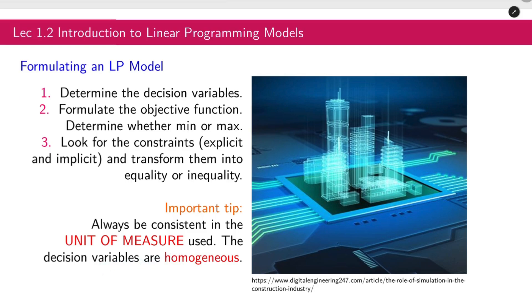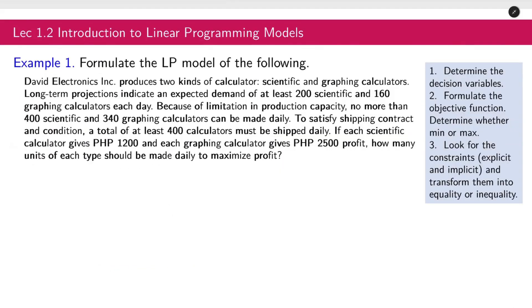Let us now formulate the LP model of the following problem. David Electronics Incorporated produces two kinds of calculator: scientific and graphing calculators. Long-term projections indicate an expected demand of at least 200 scientific and 160 graphing calculators each day. Because of limitation in production capacity, no more than 400 scientific and 340 graphing calculators can be made daily. To satisfy shipping contract and condition, a total of at least 400 calculators must be shipped daily.